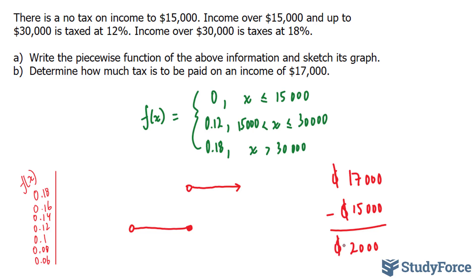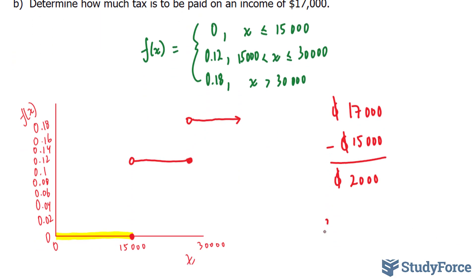And only $2,000 is going to be taxed at this rate. So we're going to take $2,000 and multiply it by 0.12. And this gives us a total of $240, not too bad. So there you have it.